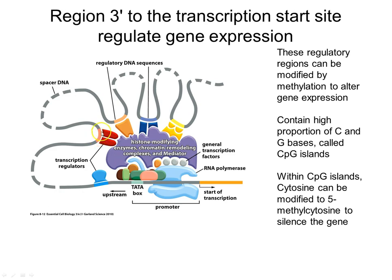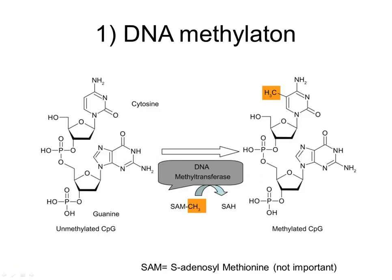DNA methylation involves a C linked to a what we call a CpG island — a cytosine followed by a guanine. If that cytosine is methylated, then in general the transcription factor won't bind, which silences gene expression. So a single methylated C, even 10,000 bases away from the transcription start site, could prevent the transcription complex from forming and prevent gene expression.